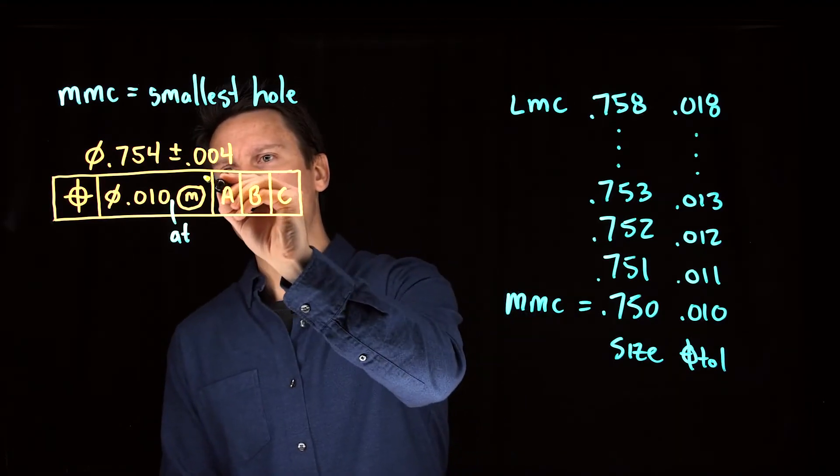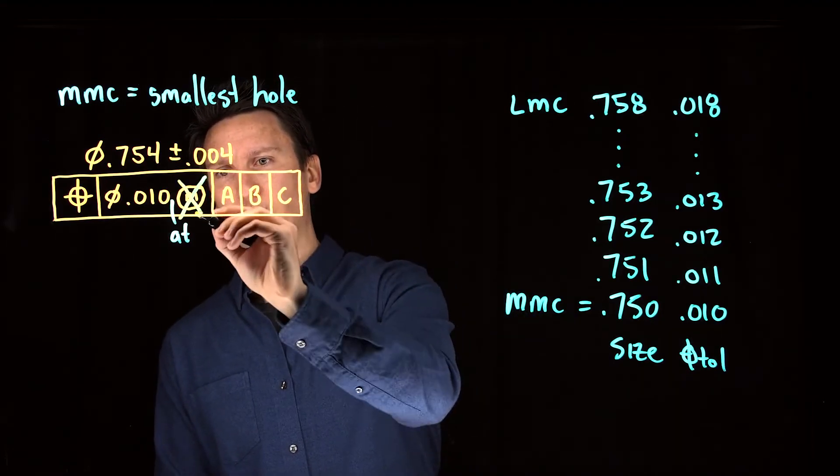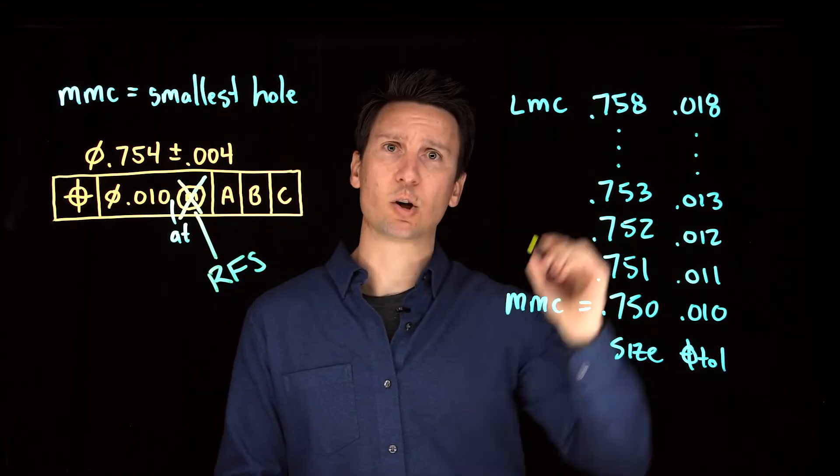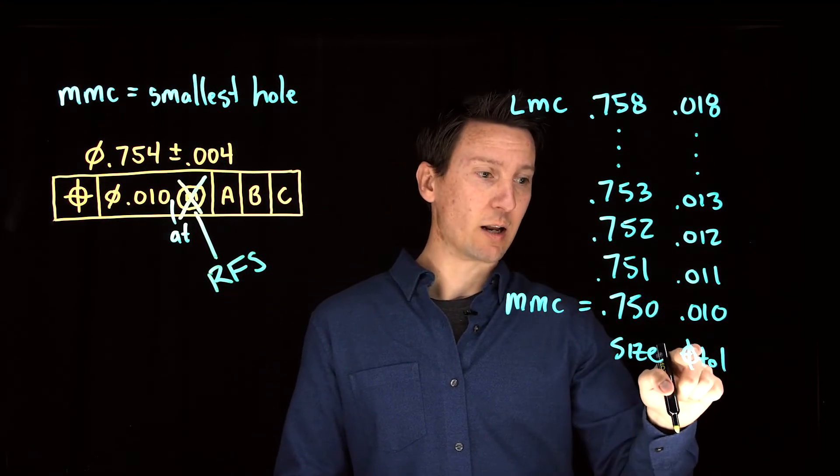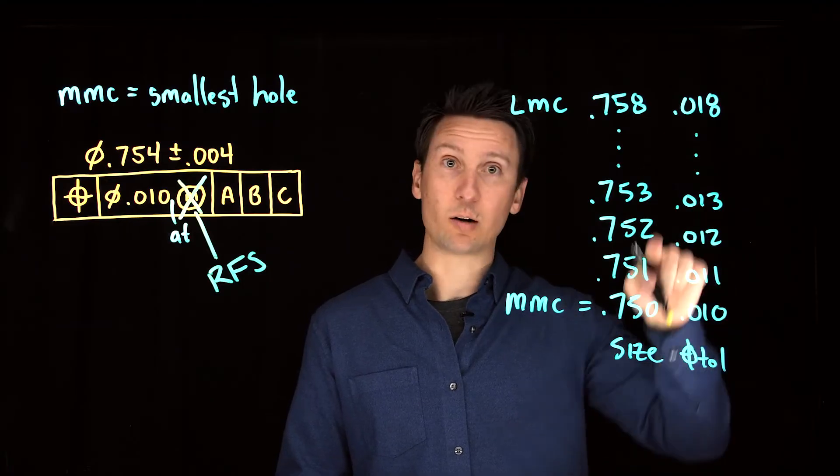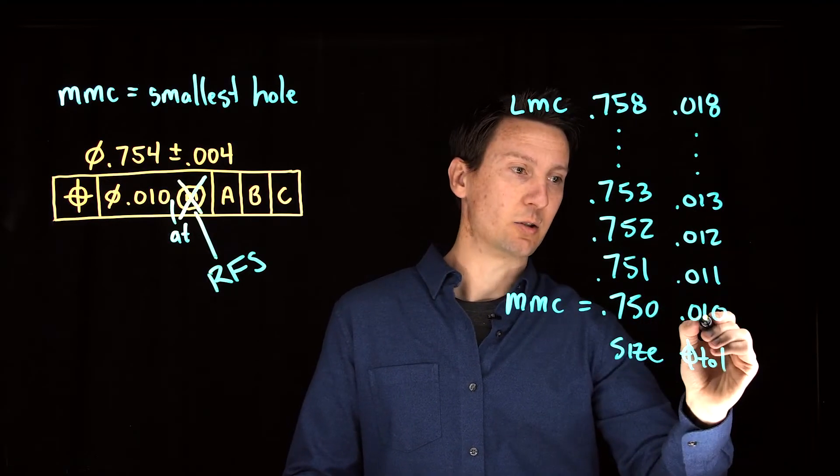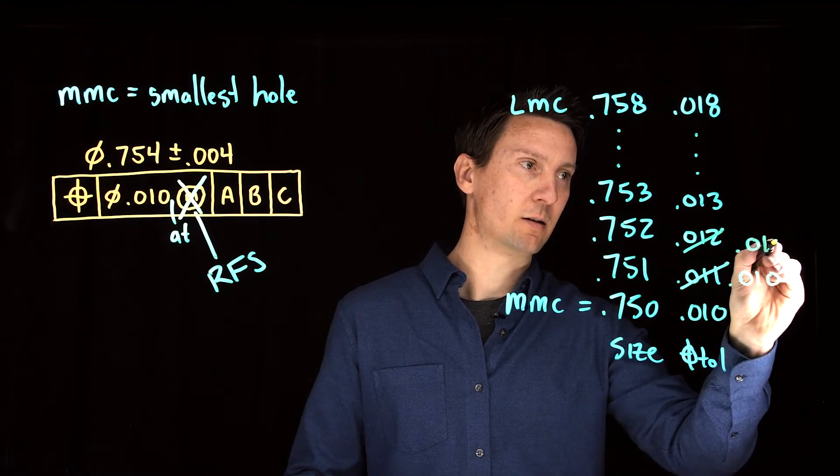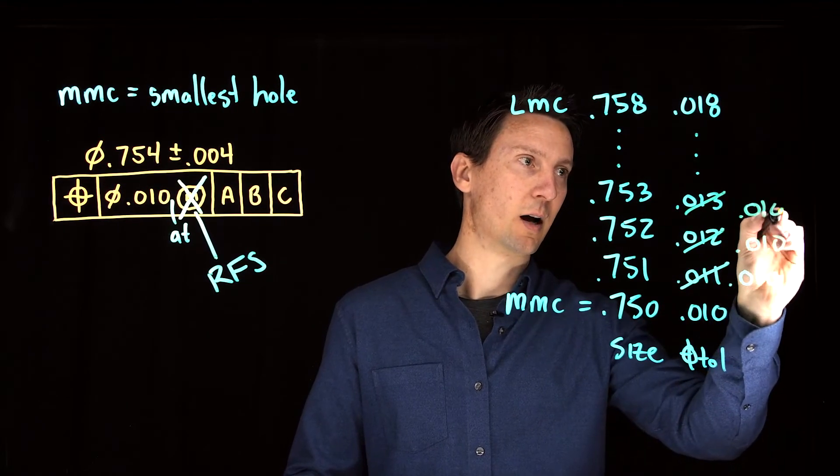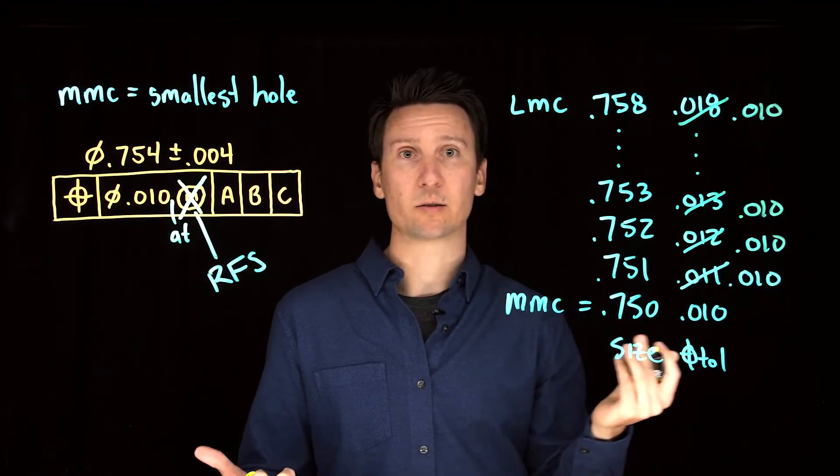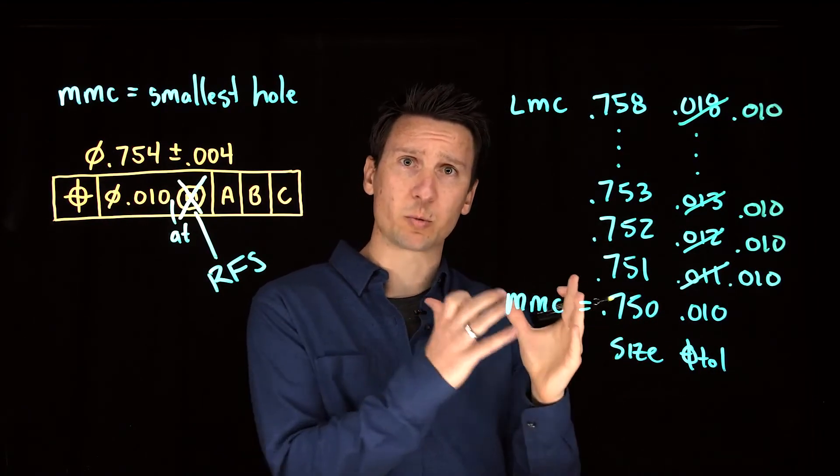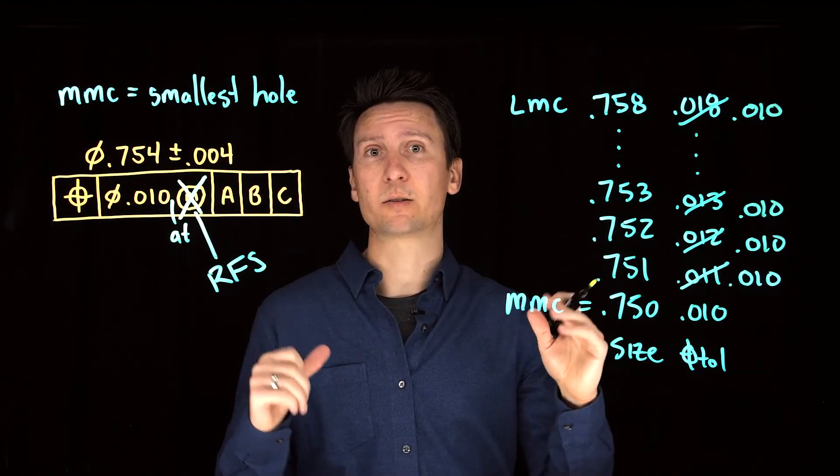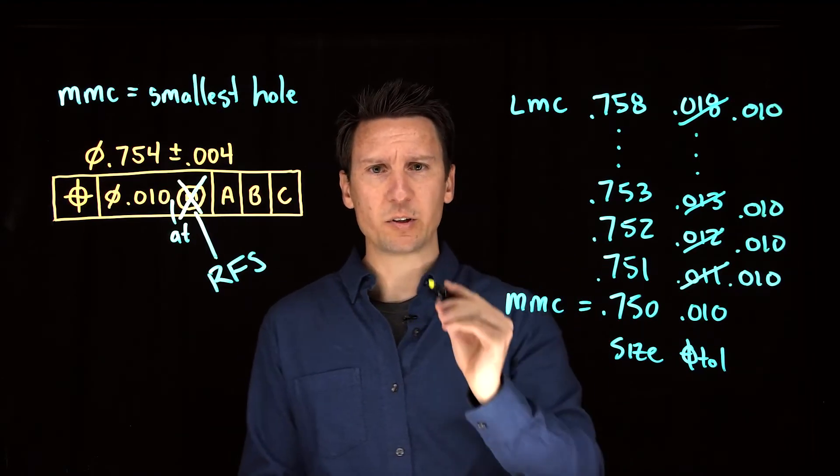Now what would happen if I got rid of the MMC modifier and went to default, regardless of feature size? How would this chart change? Now you get a position tolerance of 10 regardless, no matter what the size. So you get 10 here, you would get 10 here, you would get 10 here, all the way up you get 10 thou no matter what the size. This would work, the parts would still fit, but you're not taking advantage of that extra bonus tolerance.